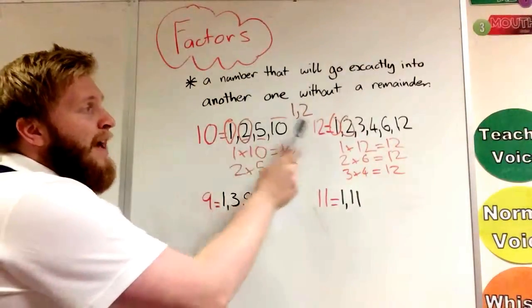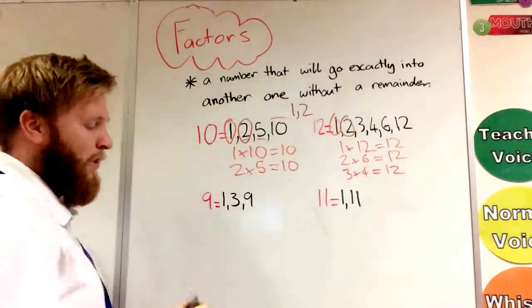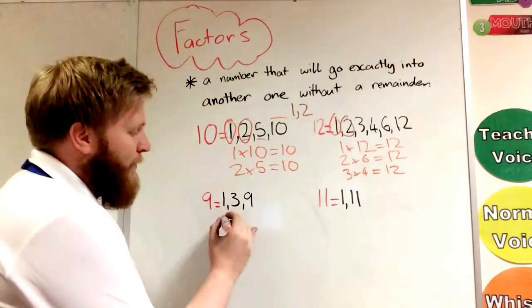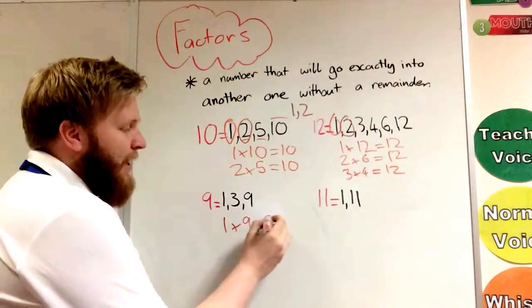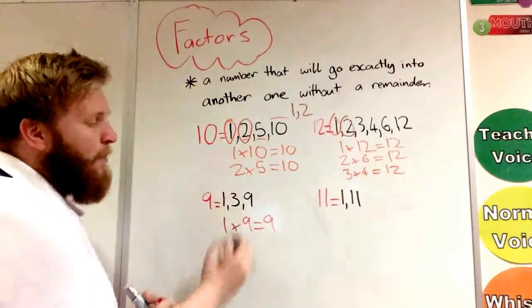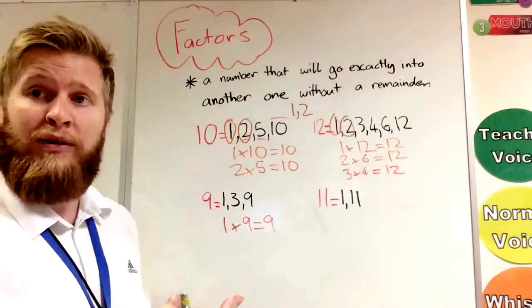Now I'm going to look here at 9. The reason I'm looking at this one is because we always have factor pairs, but here we don't have factor pairs. Let's see what we've got. We've got 1 times 9 is 9, of course, but then we've got 3 there. There's no factor pair with that. Why?